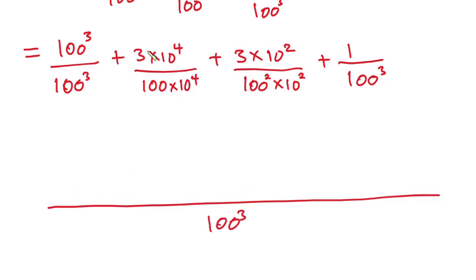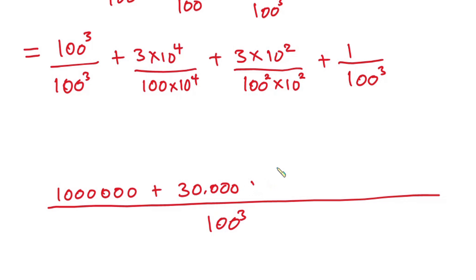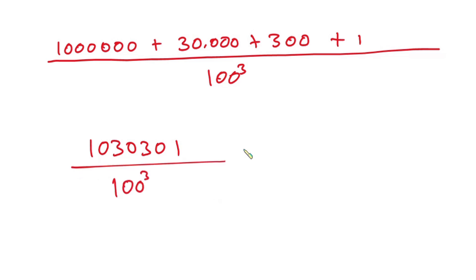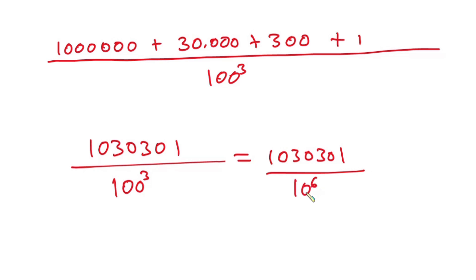Considering the numerators: 100³ is 1,000,000; plus 3 times 10⁴ is 30,000; plus 3 times 10² is 300; plus 1. Combining the numerator we get 1,030,301, divided by 100³, which can also be written as 1,030,301 divided by 10⁶.